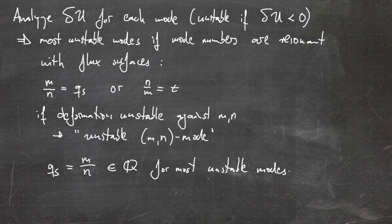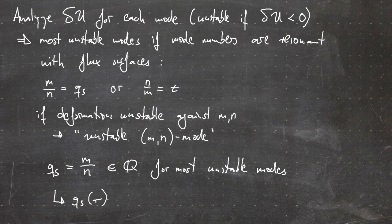Since the safety factor is not constant but a function of radius, along its radial profile there will certainly be positions where q_s equals a rational number — and thus these positions are prone to instabilities of a certain mode number combination.